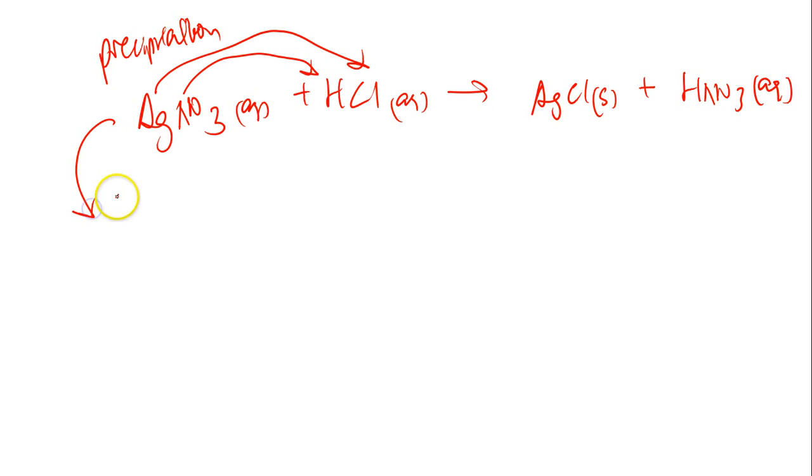Second step, I will split this into ions. Aqueous means I can split into ions: Ag plus, NO3 minus. Aqueous: H plus, Cl minus. Solid - I can't do anything about this, it can't split into its ions, even though it is an ionic compound, because it is not soluble in water.